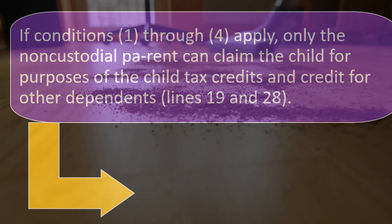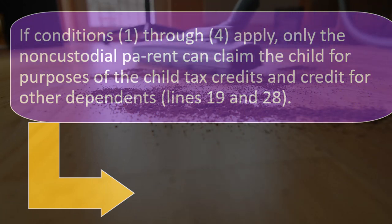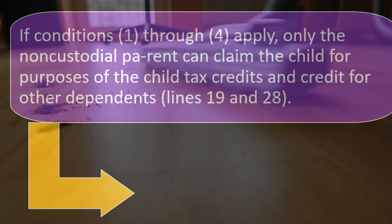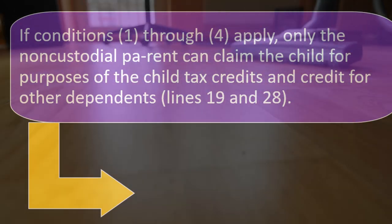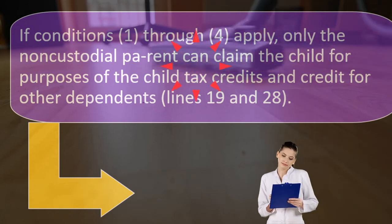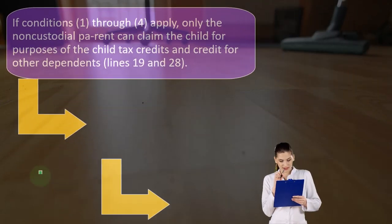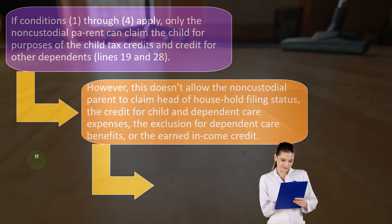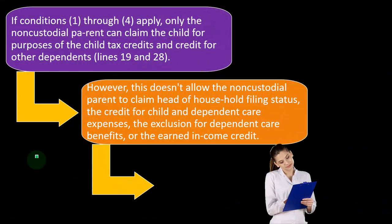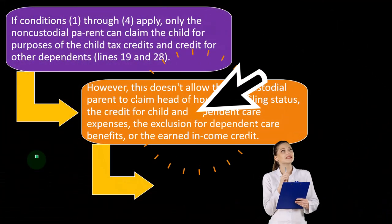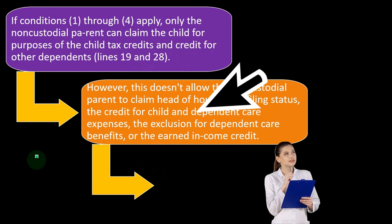What would ideally happen is that whatever separation or custody agreement is worked out, you have it worked out with the understanding that you can't have both people getting the tax benefit of the one child. That's going to be part of whatever gets worked out. However, this doesn't allow the non-custodial parent to claim head of household filing status.